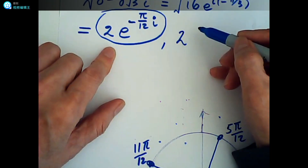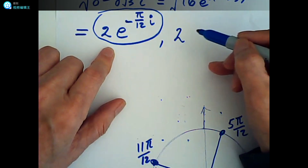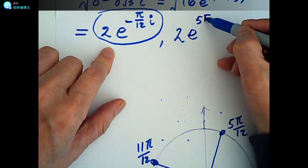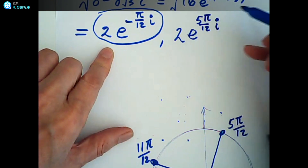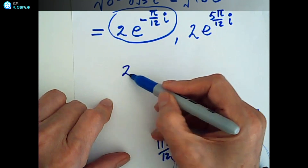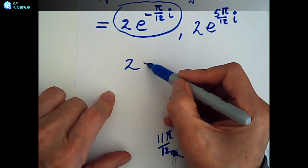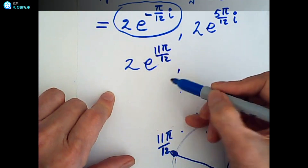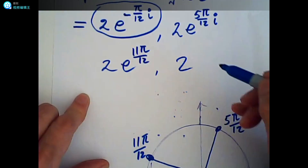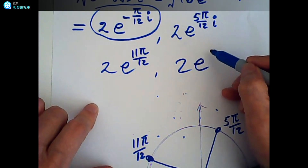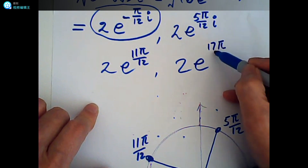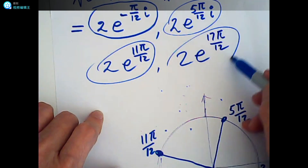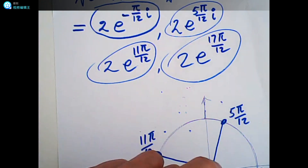So now I have four roots. The first is 2 e to the negative pi over 12 i. The second is 2 e to the 5 pi over 12 i. The third is 2 e to the 11 pi over 12 i. And the fourth is 2 e to the 17 pi over 12 i.